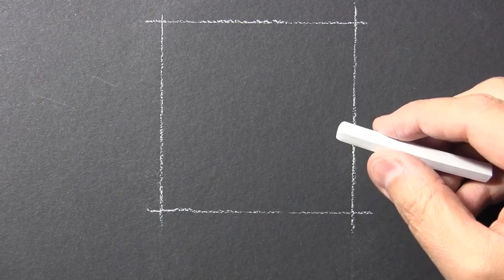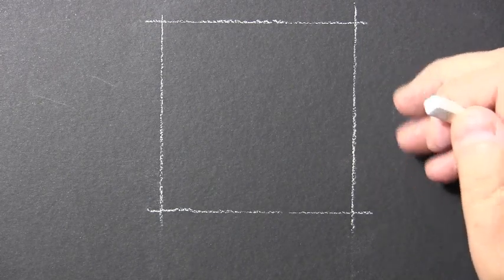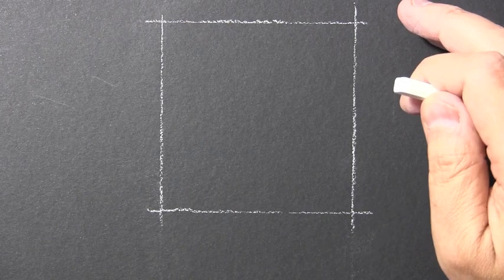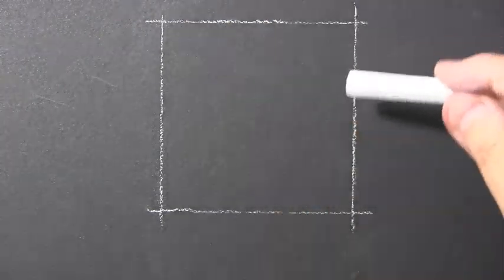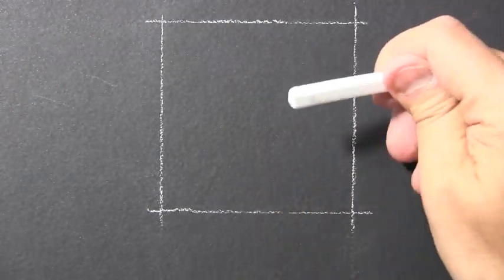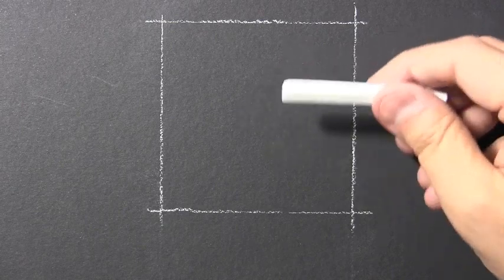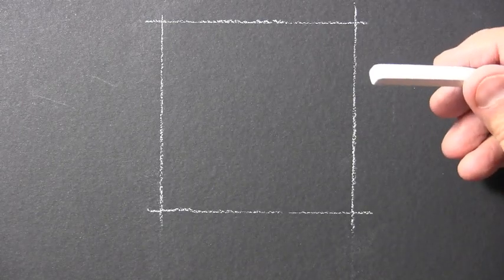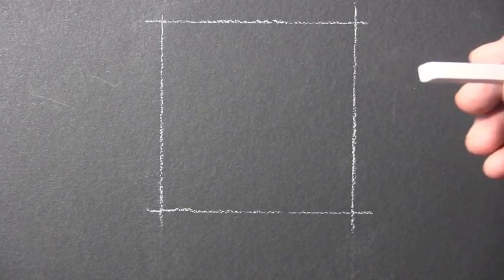I've decided to do this illustration with white colored pencil on black paper. But I should caution you that what we have here, this square, has actually been drawn with white chalk. That's because I want it to be fully erasable, which is possible with chalk, not so much with colored pencil.